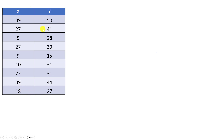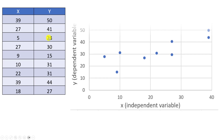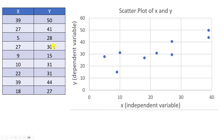The most common thing to do with this type of data would be to create a scatter diagram or scatter plot — those two terms are used interchangeably. On a scatter plot, the x variable or independent variable is graphed on the horizontal axis, and the y or dependent variable is graphed on the vertical axis. Each x-y pair is graphed onto the scatter plot.